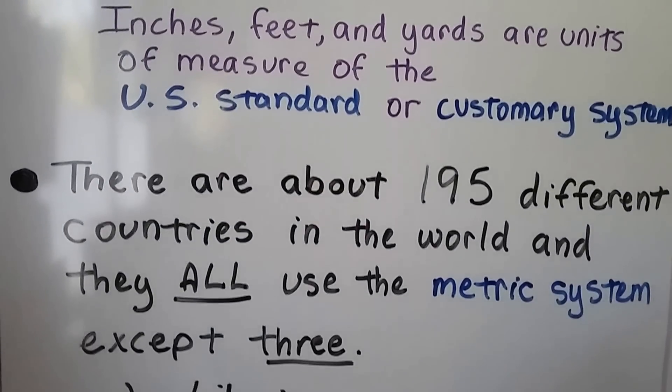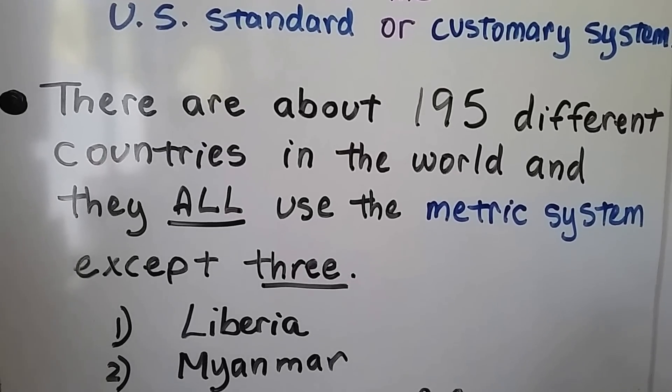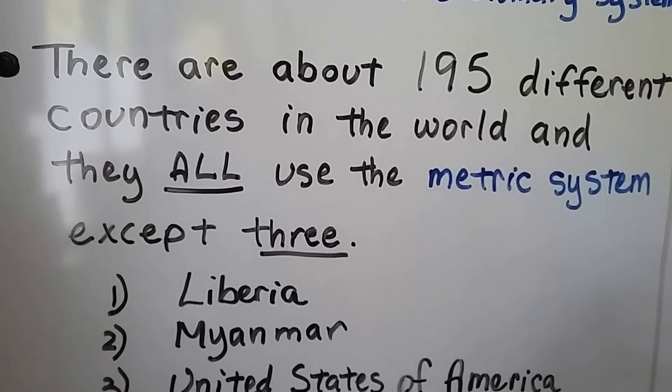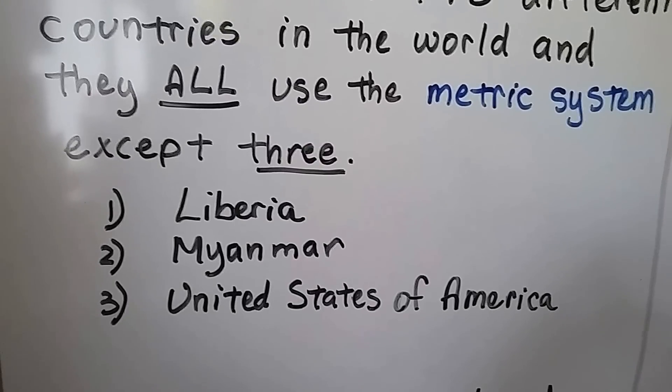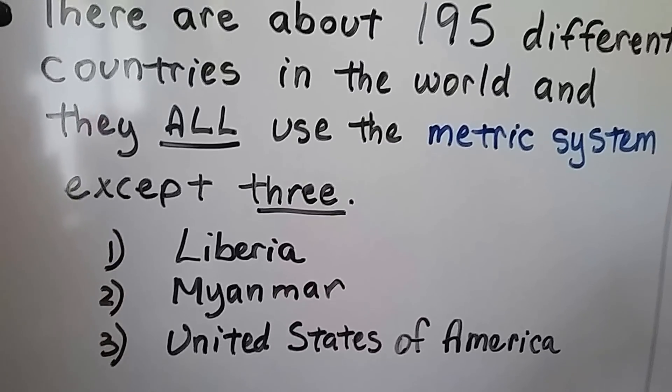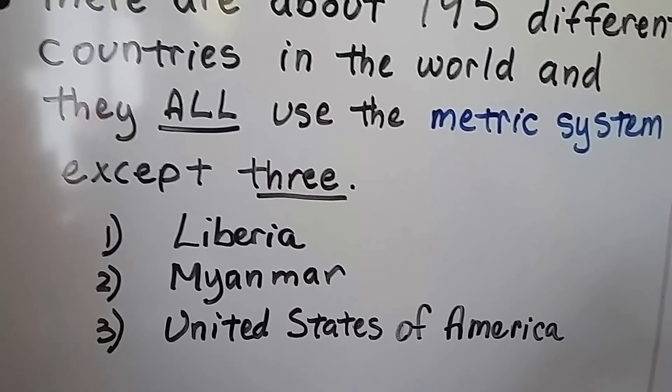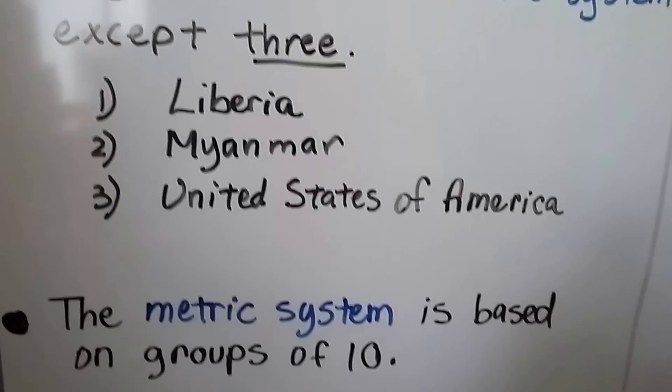There are about 195 different countries in the world, and they all use the metric system except three: Liberia, Myanmar, and the United States of America. Out of 195, only three don't use the metric system, and we're one of them.